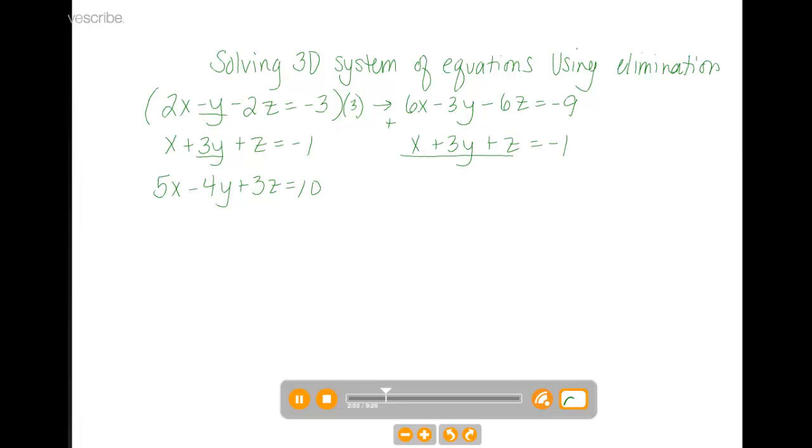When we add those two equations together, 6x plus x gives us 7x. Negative 3y plus 3y, those cancel out. Negative 6z plus z becomes negative 5z. Negative 9 plus negative 1 becomes negative 10. We've eliminated our y's.